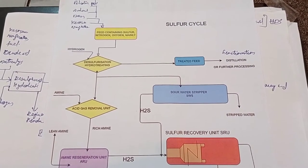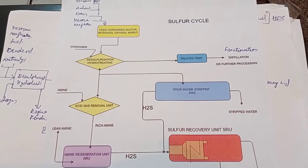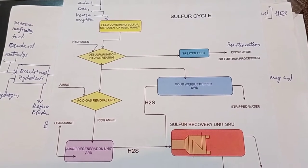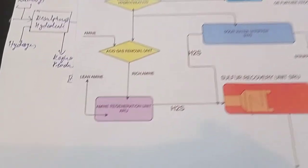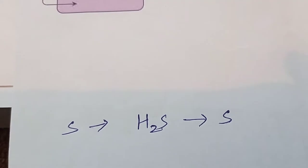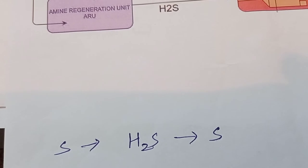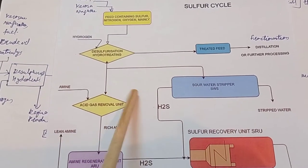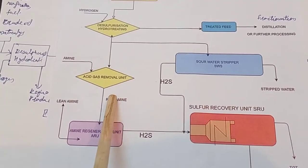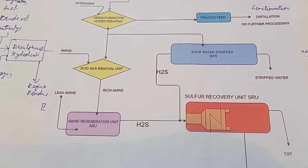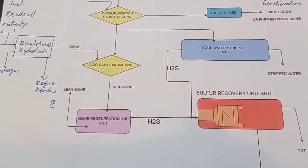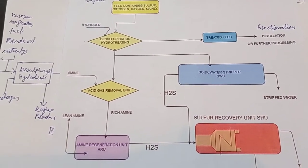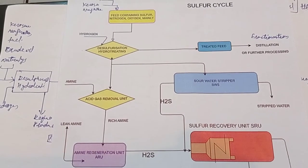Hello guys, good morning, welcome to my channel Chemical Dairy. In this video I'm going to explain about the sulfur cycle — how sulfur remains in elemental form in petroleum and how we remove it. You will learn about hydrotreating desulfurization, acid gas removal unit, amine regeneration unit, sour water stripper unit, and sulfur recovery unit. Let's start.